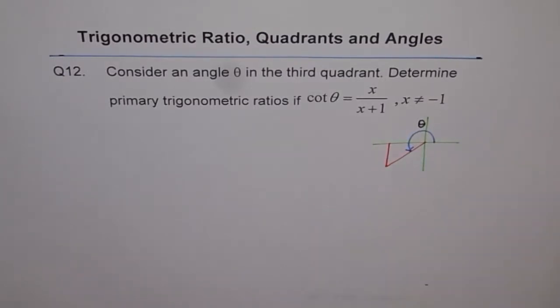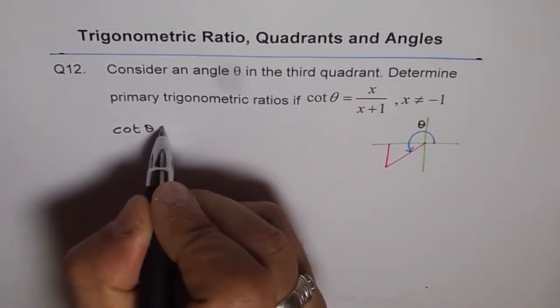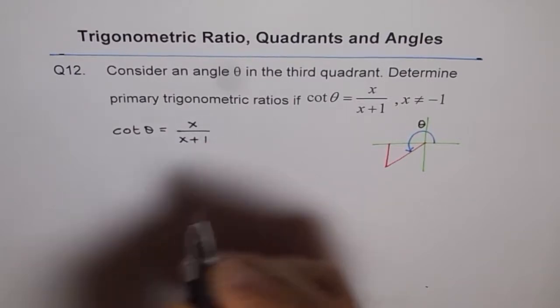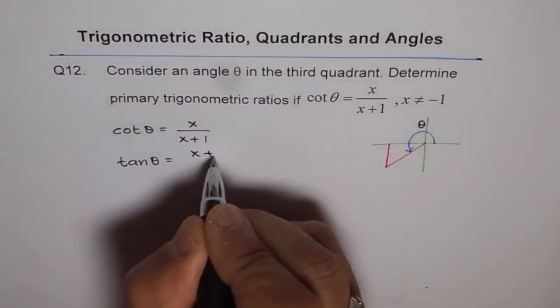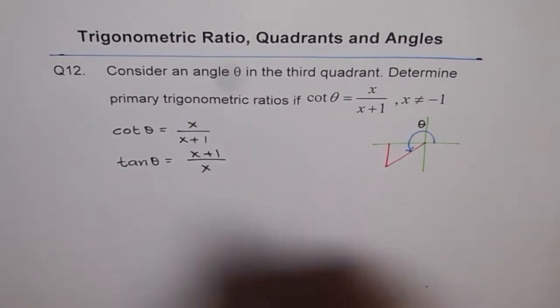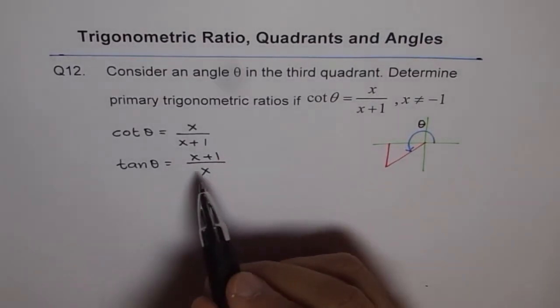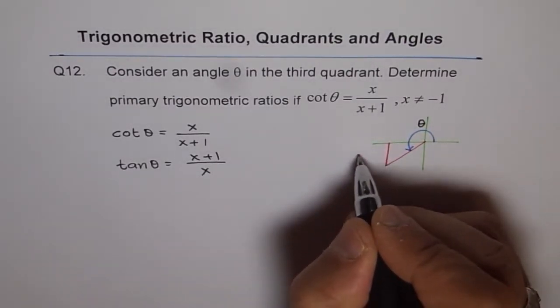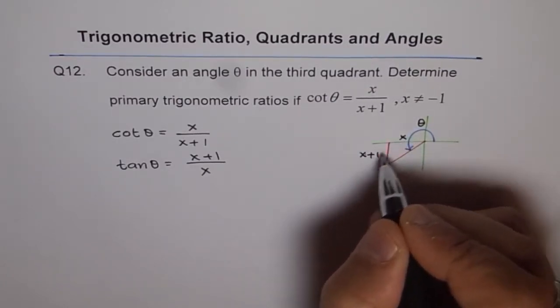Now it is given to us that cot theta is equal to x over x plus 1. That means tan theta will be the reciprocal of this, right? So that is tan theta. And what is tan theta? SOHCAHTOA, opposite over adjacent side. So opposite side is x plus 1. So we can write here x plus 1 and adjacent as x. So these are our sides.